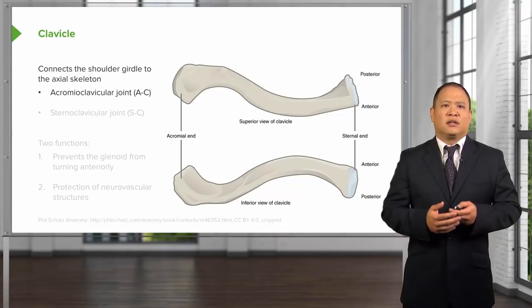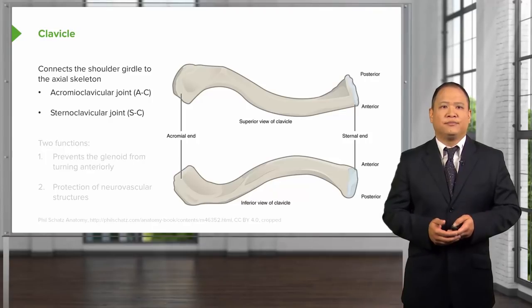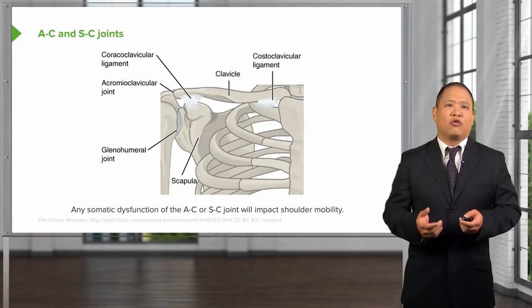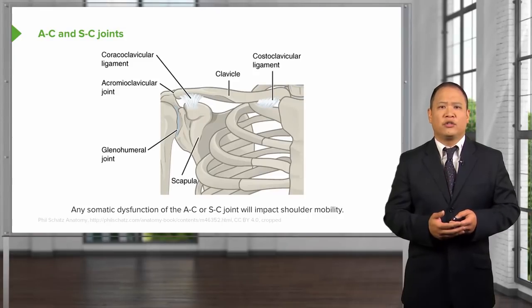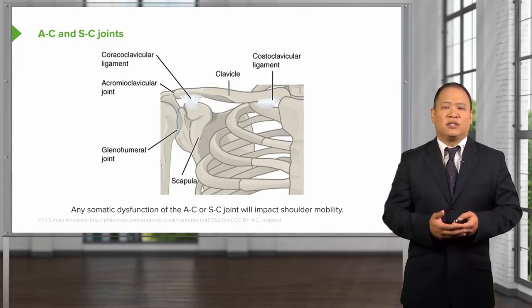The clavicle has two different joints: the acromioclavicular at the distal end and the sternoclavicular at the proximal end. The two major functions are to prevent the glenoid from turning anteriorly and to protect the neurovascular structures that pass in the region. If we have any somatic dysfunctions that restrict motion at the AC or SC joints, it could potentially impact shoulder mobility.